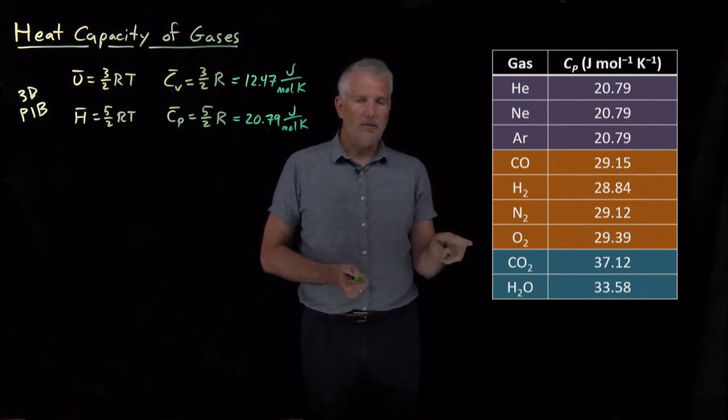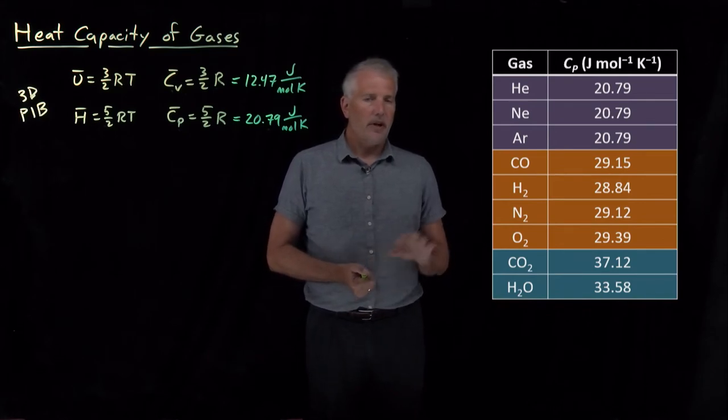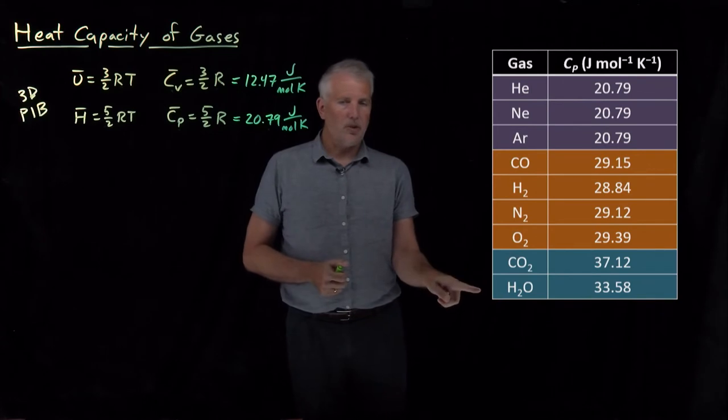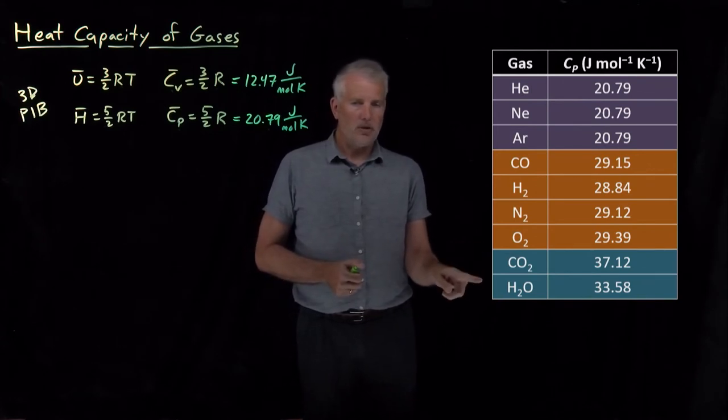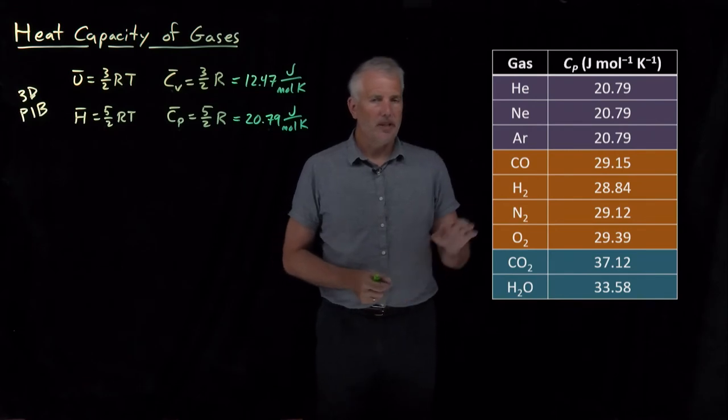But the rest of these are not. These numbers I've colored orange, values near 29, that's nothing like 20.79. CO2 and H2O, those are even worse. Those values are much higher than 20.79. And we can see some patterns here.